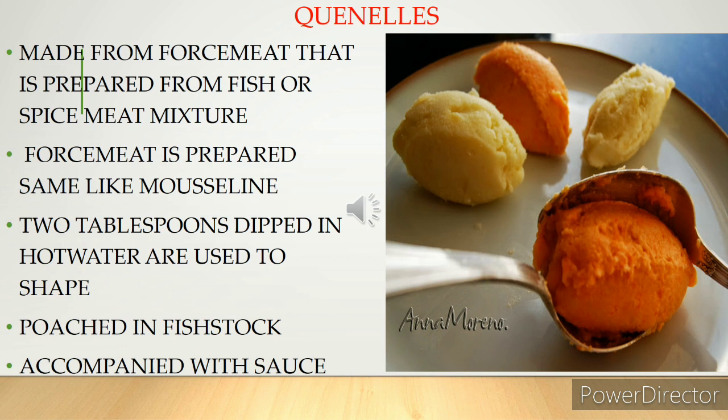Quenelle means dumpling. Quenelles are made from force meat prepared from fish or spiced meat mixture, prepared like mousseline. Two tablespoons are used to give the quenelle its characteristic oblong or oval shape, similar to an egg. They are poached in fish stock, and the same stock is used for making the sauce that accompanies the quenelles.